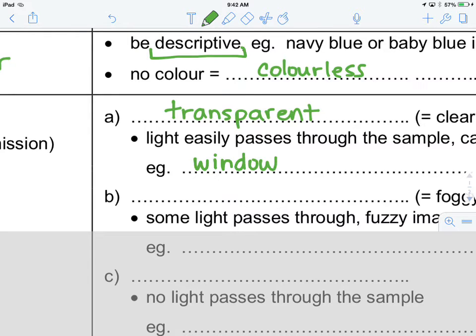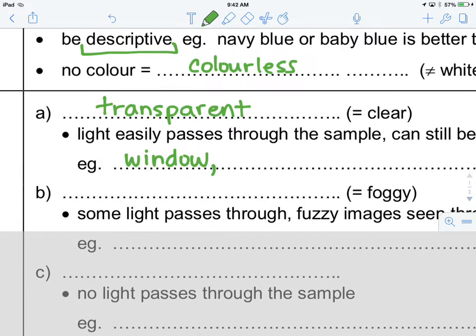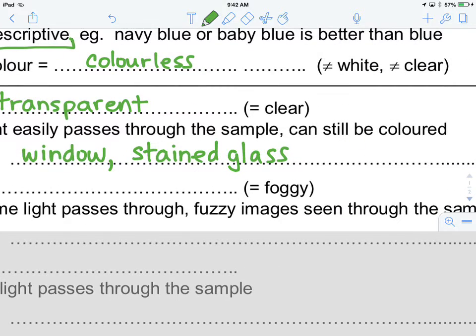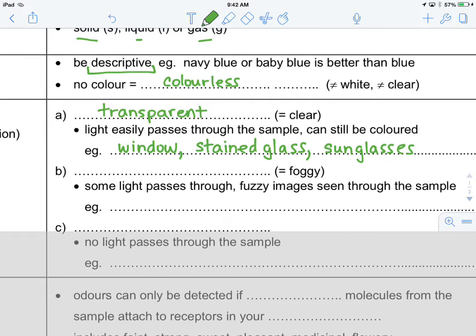And we don't necessarily have to talk about just a clear colorless window, we could also talk about a stained glass window because that also allows light to transmit and very often those windows are colored. Another type of clear substance would be sunglasses. The lenses in your sunglasses are certainly not colorless, but they are clear.